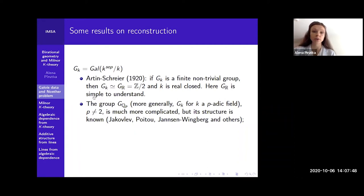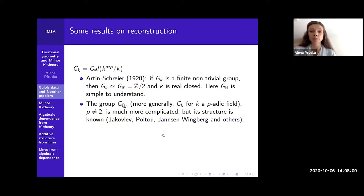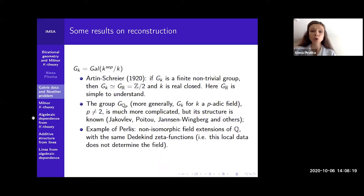For a p-adic field or Q_p, the Galois group is also understood but much more complicated — there are results by Yakovlis, Watul, Janssen, Winberg, and others. There was also an example by Perlis who showed that there are non-isomorphic field extensions of the field of rational numbers with the same Dedekind zeta functions. The reason I put it here is just to give you an example where this local data does not determine the field or the field extension in particular.